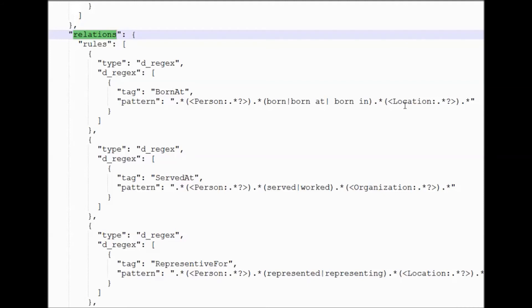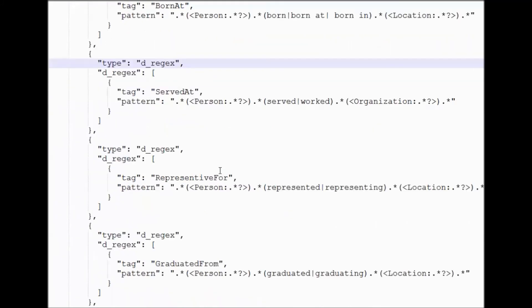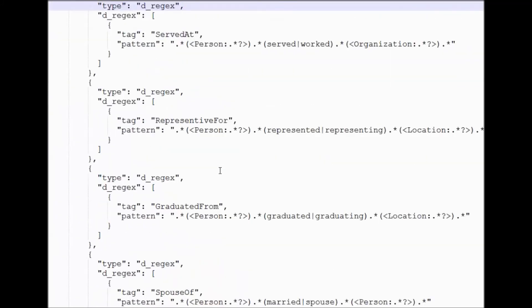The text categorization such as person or location is obtained from the Watson natural language understanding. Similarly we have specified the different regular expression patterns to identify the relationships that we are interested in in the text content.